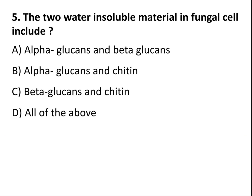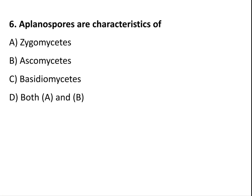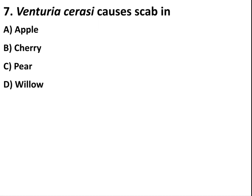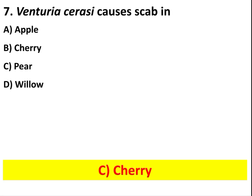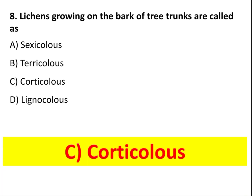The two water-insoluble materials in fungal cell include beta-glucan and chitin. Aplanospores are characteristic of Zygomycetes. Venturia cerasi causes scab in cherry. Lichens growing on the bark of tree trunks are called corticolous.